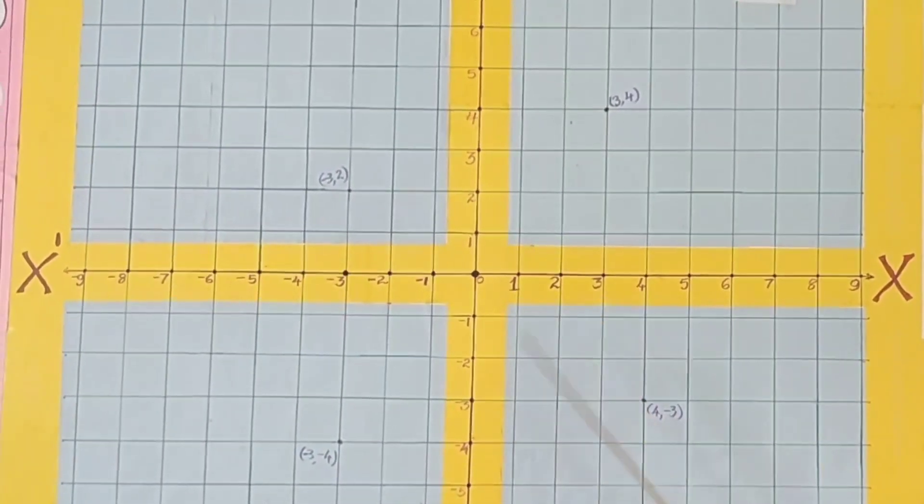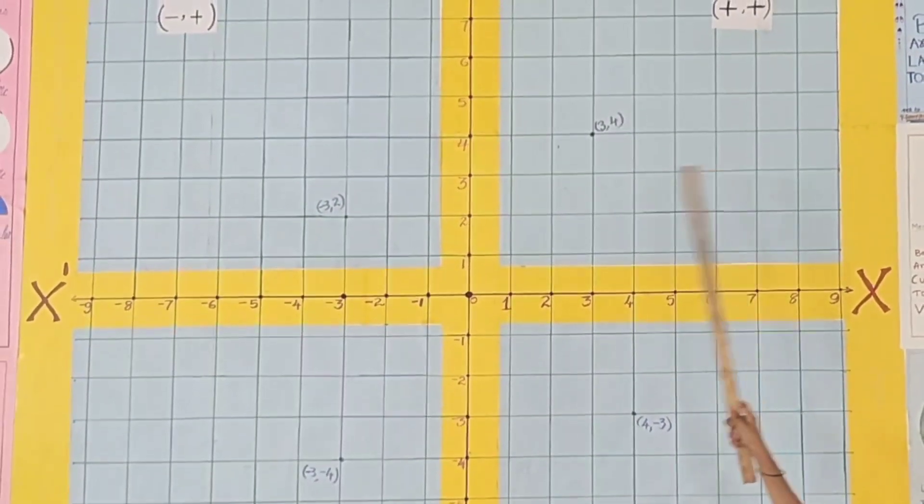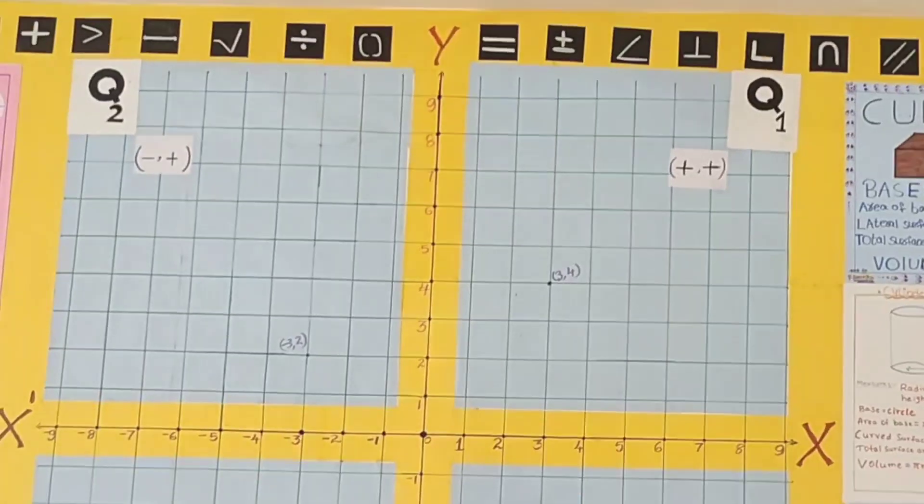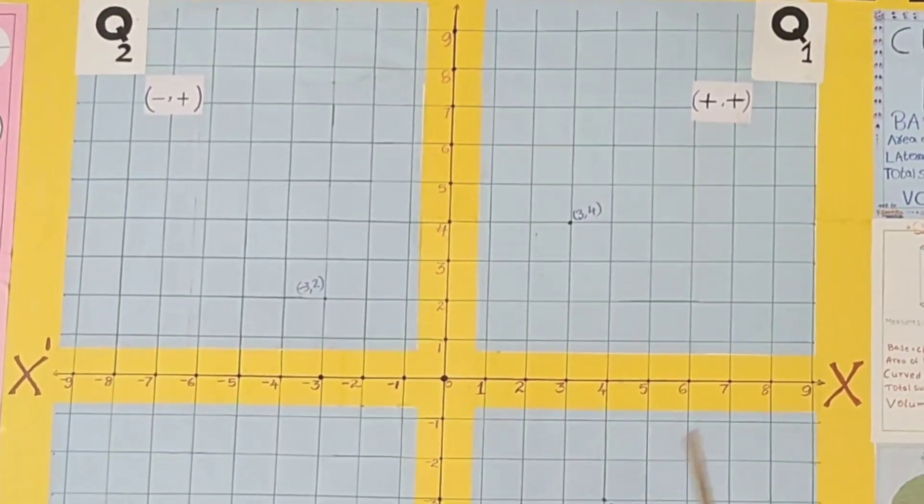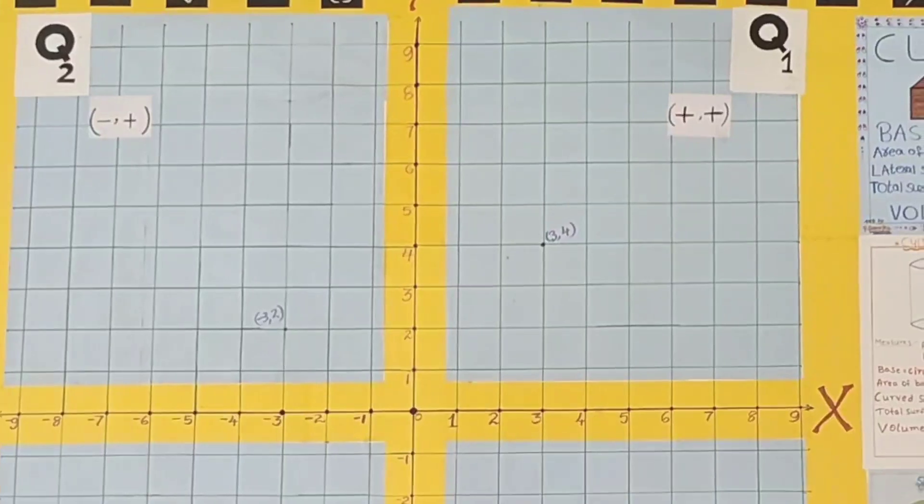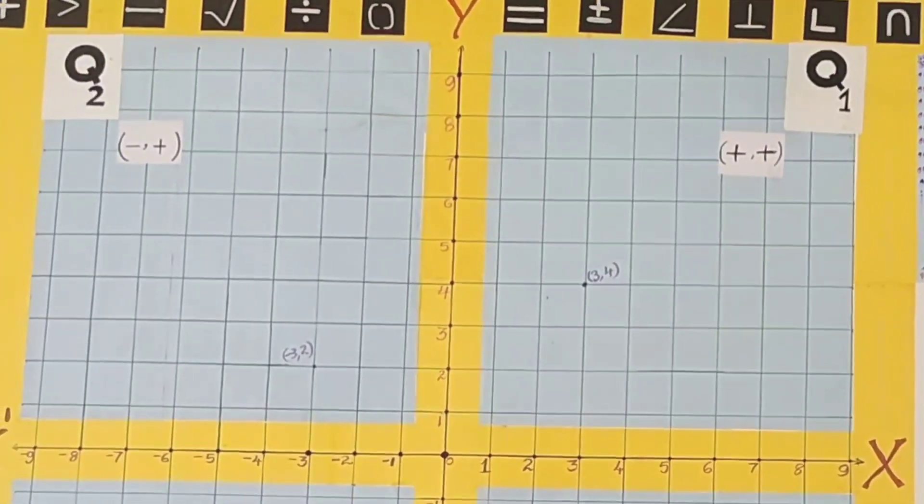These both axes divide the coordinate plane into four parts. Each part is called quadrant: Q1, Q2, Q3, Q4. This coordinate plane defines a point. A point has two coordinates: X-coordinate, Y-coordinate. X-coordinate is called abscissa. Y-coordinate is called ordinate.